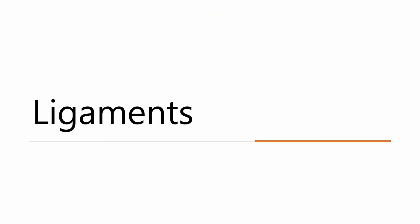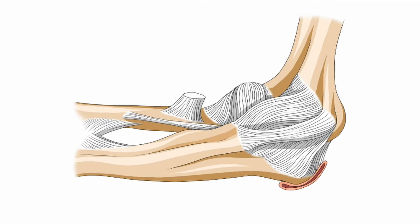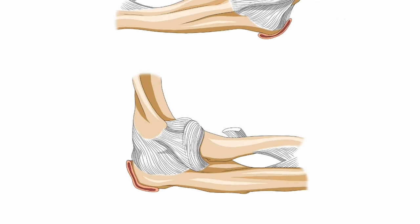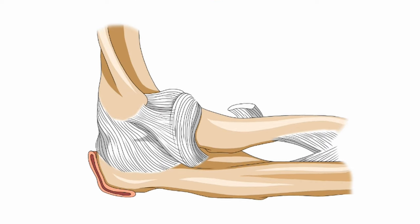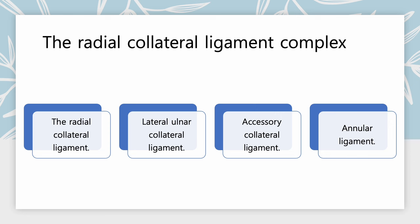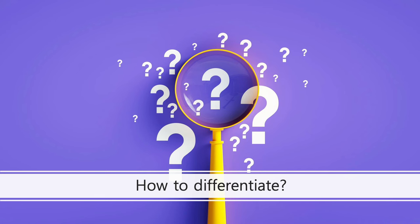The ulnar collateral ligament comprises anterior, posterior, and transverse bundles. The radial collateral ligament complex includes the radial collateral ligament, lateral ulnar collateral ligament, accessory collateral ligament, and annular ligament. This complex fuses with the overlying common extensor tendon, making them indistinguishable histologically or ultrasonographically. When assessing tears, identifying whether the pathology is superficial or deep is critical to determine whether the injured tissue is tendon, ligament, or both. The type of tear or degeneration becomes a crucial prognostic factor in treating tennis elbow.